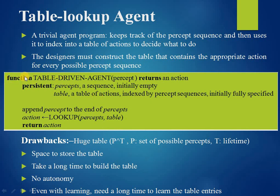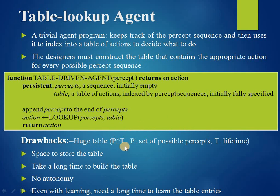To build a rational agent, the designer must construct a table containing the appropriate action for every possible percept sequence. If P is the set of possible percepts and T is the lifetime of the agent — the total number of percepts it will receive — then the lookup table will contain P raised to T entries, which is a very huge number.